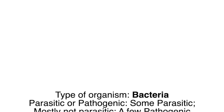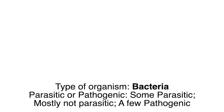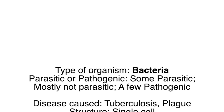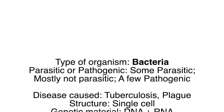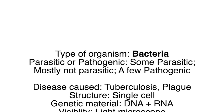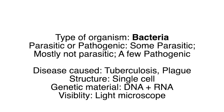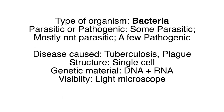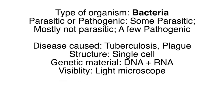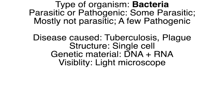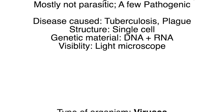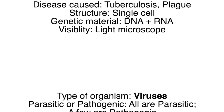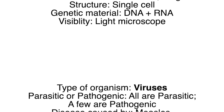Type of organism: bacteria — some parasitic, mostly not parasitic, a few pathogenic. Diseases caused include tuberculosis and plague. Bacteria are usually single-celled with DNA and RNA, visible by light microscopy.